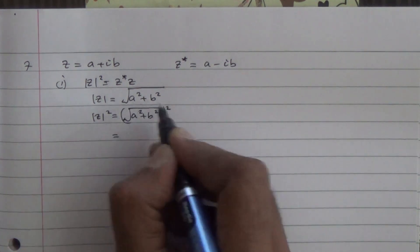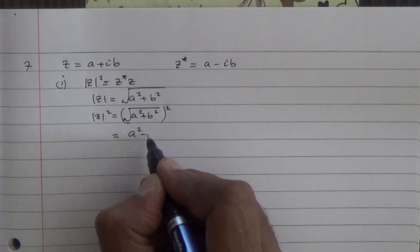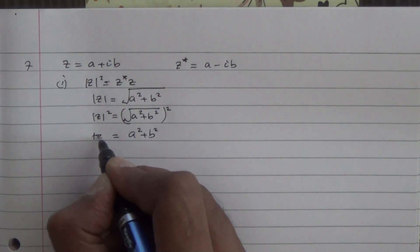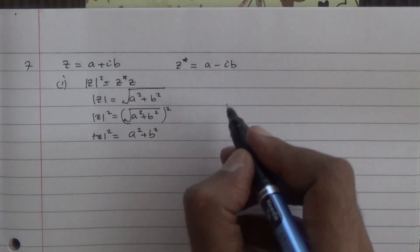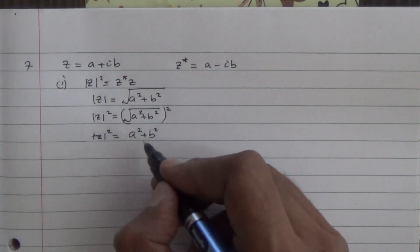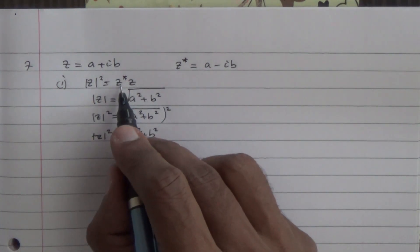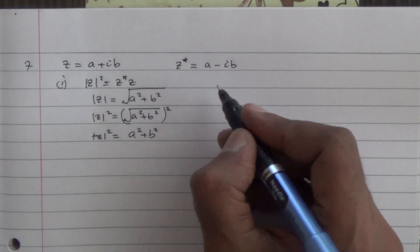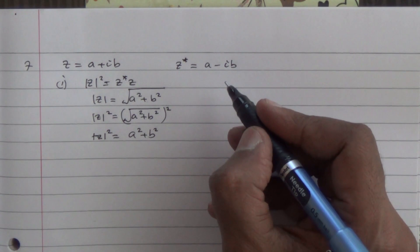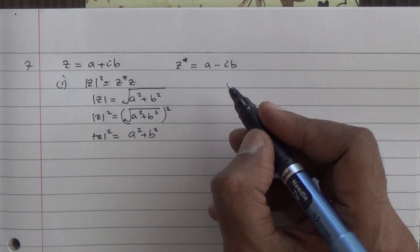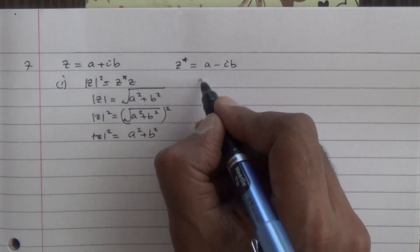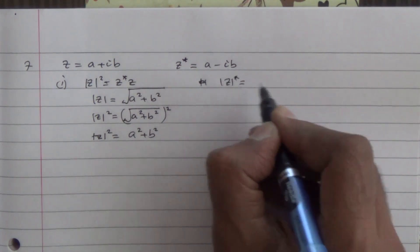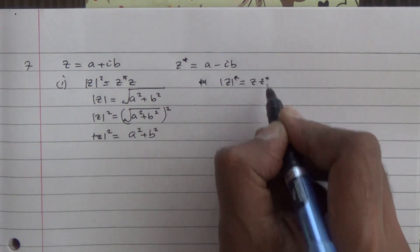Of course, the square root sign is going to go away, and we're going to be left with a squared plus b squared — that's going to give us the modulus of z squared. Now, we should prove that this is equal to the conjugate of z times z. This is going to be equal to z times the conjugate of z.